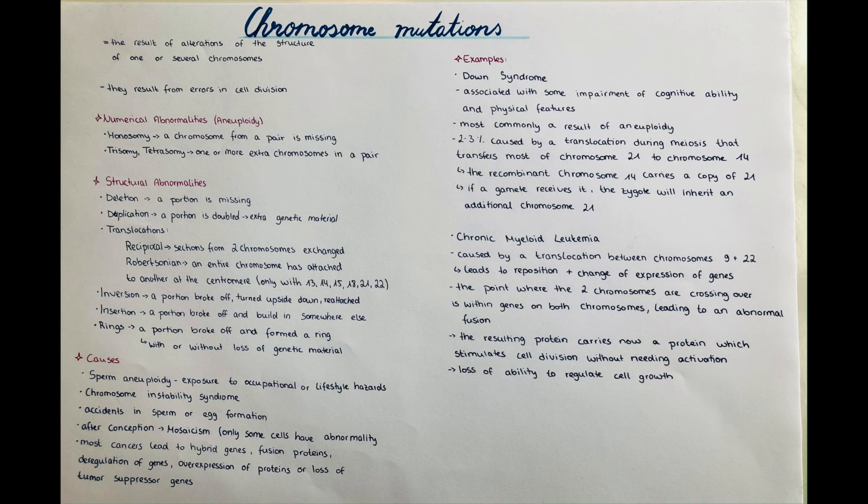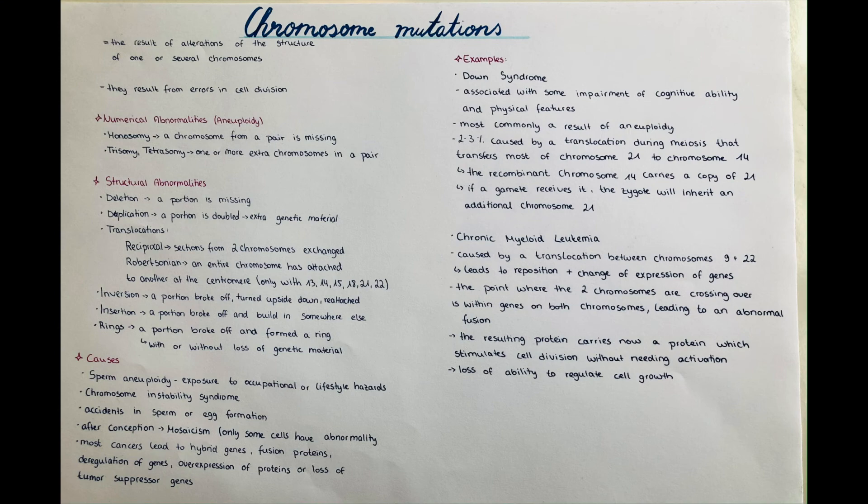Chromosome mutations are the result of alterations of the structure of one or several chromosomes. These are the result from errors in the cell division that cause a section of a chromosome to change.